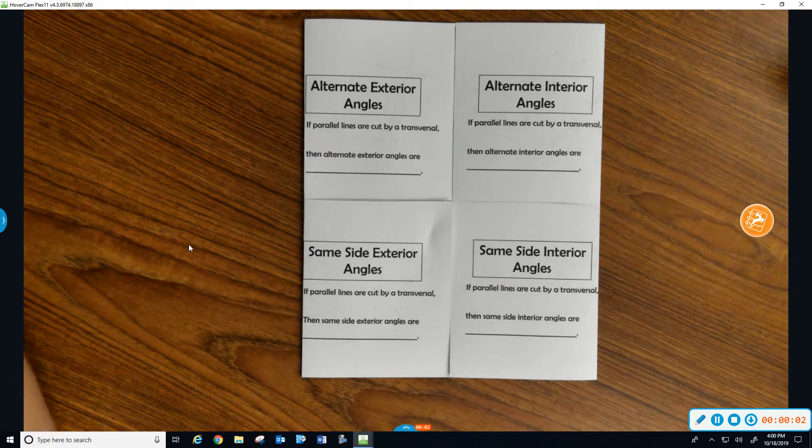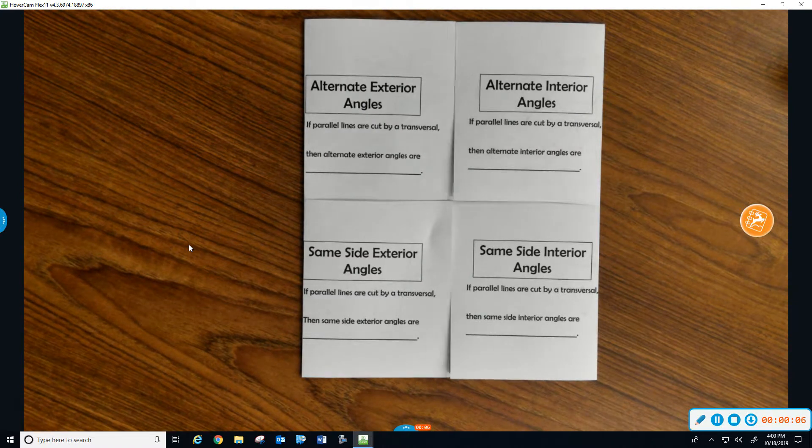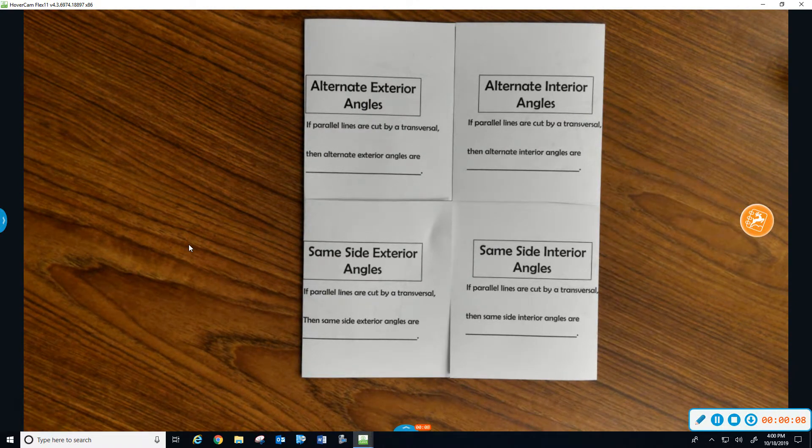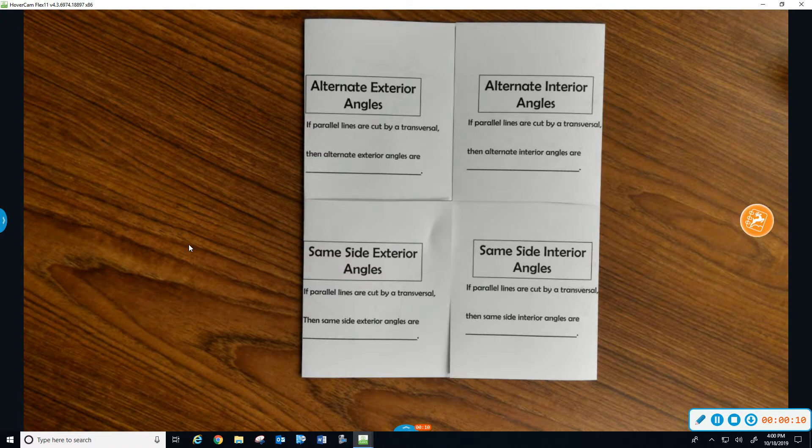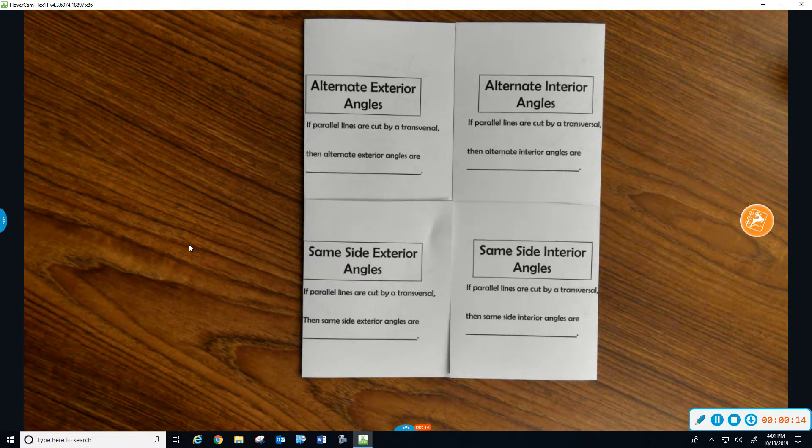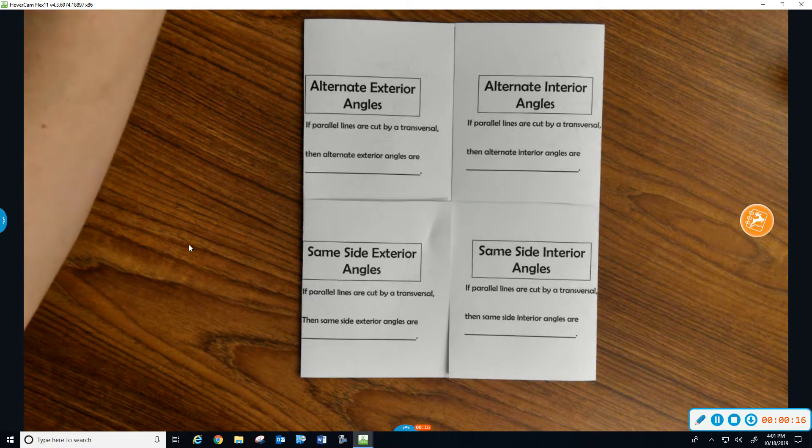Alright guys, so this is going to be the recording for Notes 2D.2. We are now going to take the four new angle pairs that we learned yesterday and we're going to throw some algebra in with it, depending on whether they are congruent or they are supplementary.